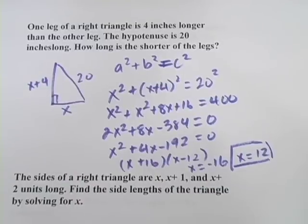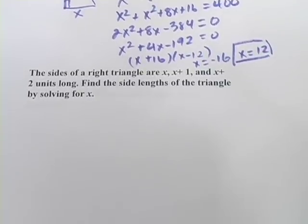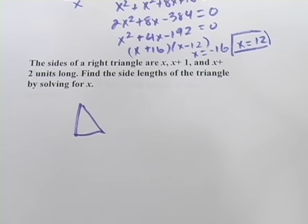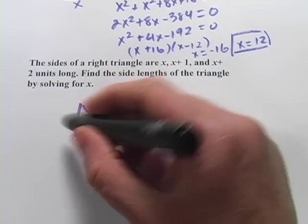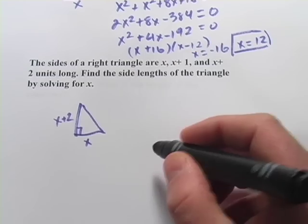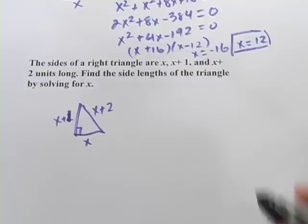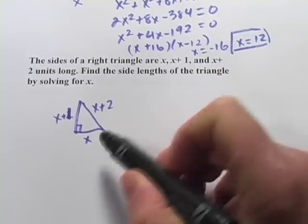All right, let's take a look at one more. This one says the sides of a right triangle are x, x plus 1, and x plus 2 units long. Some of you probably will know the answer to this just by looking at that, but let's go ahead and solve this. So we've got x, x plus 1, and the hypotenuse is going to be x plus 2. And they want us to find the side lengths of the triangle by solving for x.